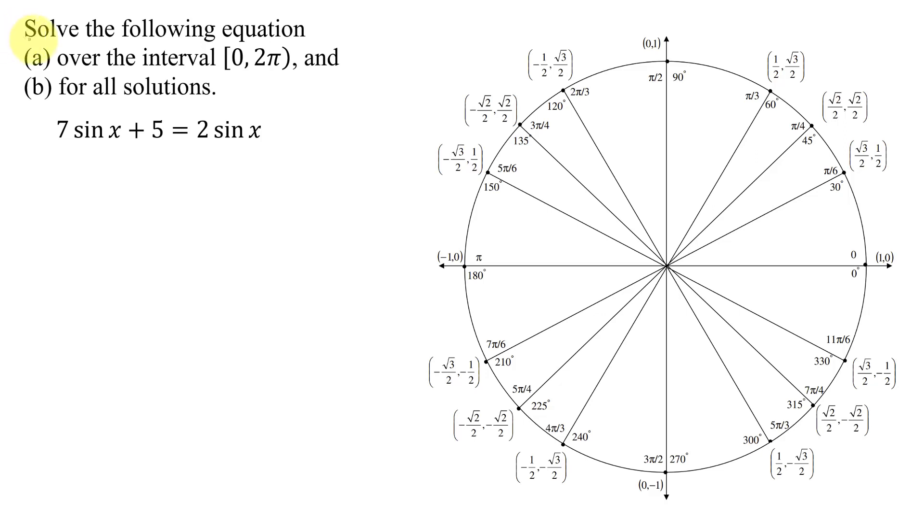In this example, I need to solve the following equation a over the interval from 0 to 2π and b for all solutions. The equation is 7 sin x + 5 = 2 sin x.